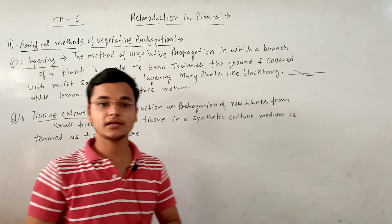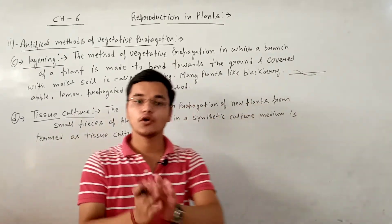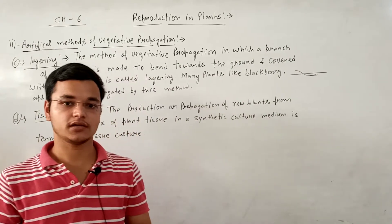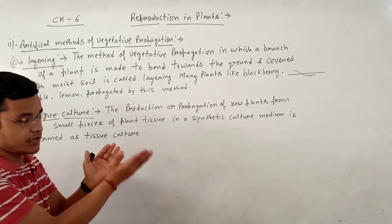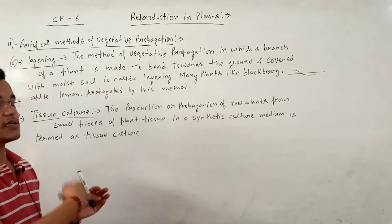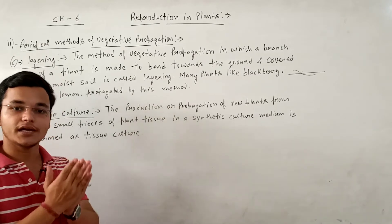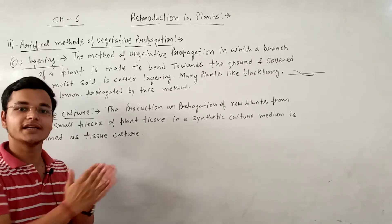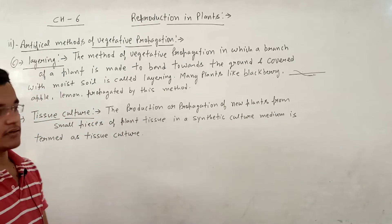उसी को हम layering कहते हैं. जो branch soil में underground है, after some time वो grow होके एक नए independent plant को form करेगी. Branch underground होगी soil में, soil moist होगी, जिससे वो branch later roots को develop करेगी. Roots से एक independent plant grow होगा, और वो अपने parent plant से detach हो जाएगा, remove हो जाएगा. तो उसे हम layering कहते हैं.